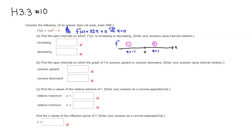And plugging in positive 1: 32 times 1 is definitely positive. So looking at f prime, where the derivative is negative, f prime is decreasing; and after 0, f prime is increasing. The increasing interval is from 0 to positive infinity, and the decreasing interval is negative infinity to 0.